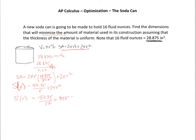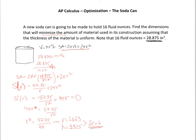When we're trying to minimize something, we set the derivative equal to 0 — we want our critical points. So setting it equal to 0, we end up with 4πr = 57.75/r². Cross-multiplying, you get r³ = 57.75/(4π). So r ends up being the cube root of that, which is 1.663 inches. Plugging that back in, h comes out to be 3.325 inches. You should notice that twice the radius equals the height — that's going to be a pattern we see on all of these problems.